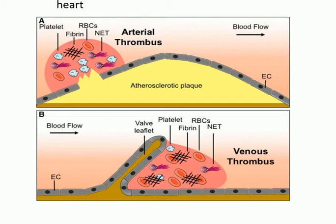Venous thrombi are further classified into thrombophlebitis and phlebothrombosis. Thrombophlebitis is venous thrombosis occurring secondary to acute inflammation of the vein — inflammation was pre-existing and led to thrombus formation. Phlebothrombosis is venous thrombosis occurring in the absence of pre-existing inflammation of the vein. These are important subtypes of venous thrombosis.